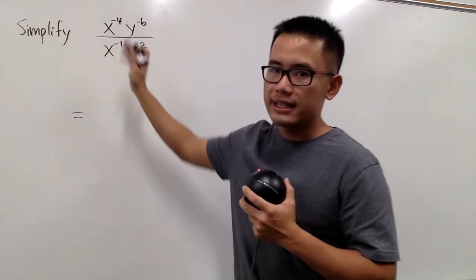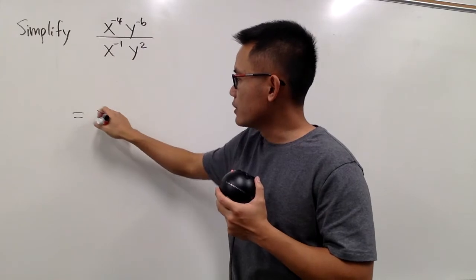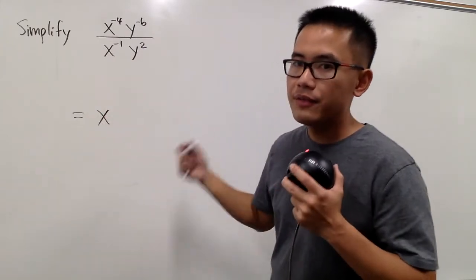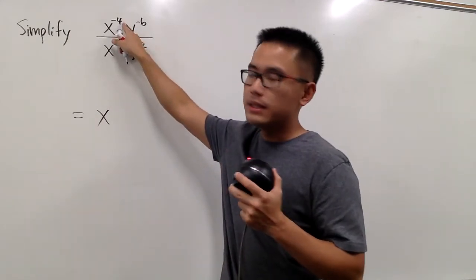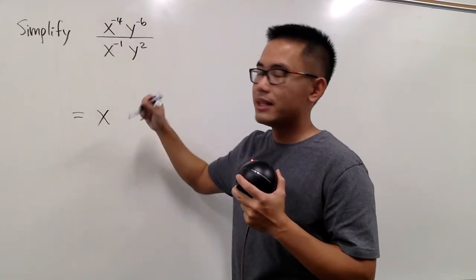First, let's work with the x. The base will stay the same, and for the new exponent, this is how we are going to figure it out. We will take the top exponent, and then minus the bottom exponent.